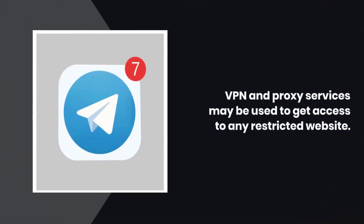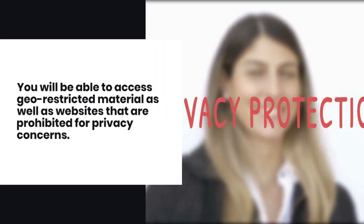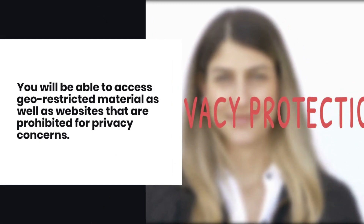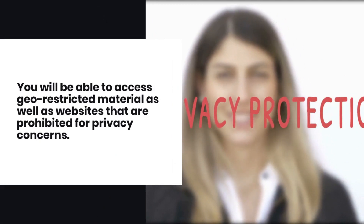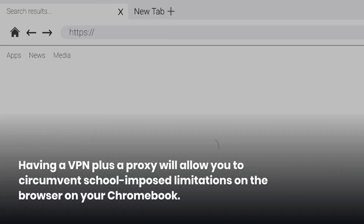VPN and proxy services may be used to get access to any restricted website. You will be able to access geo-restricted material as well as websites that are prohibited for privacy concerns. Having a VPN plus a proxy will allow you to circumvent school-imposed limitations on the browser on your Chromebook.